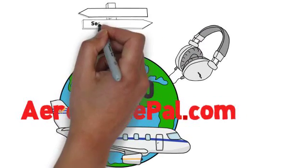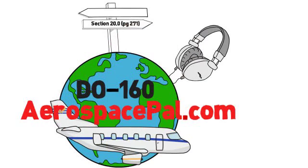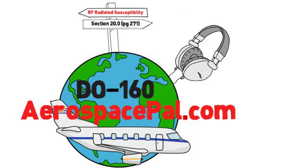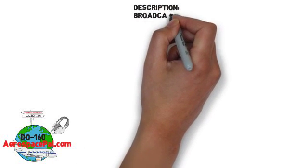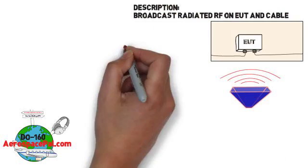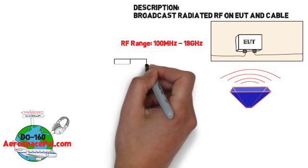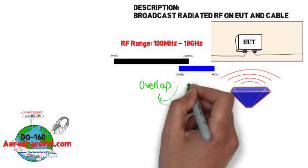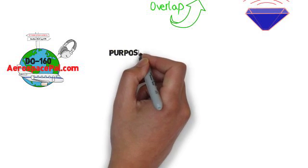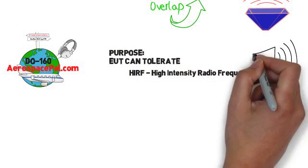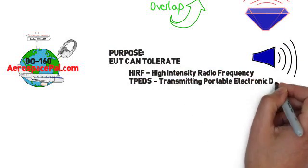In this video we'll be going over Section 20 of D160, Radio Frequency Susceptibility. Section 20 covers radiated and conducted susceptibility. We'll be going over radiated susceptibility in this video. During this test we're going to purposely broadcast radio frequencies onto the EUT and interconnecting cable. The test frequencies run from 100 MHz to 18 GHz, with a slight overlap with conducted susceptibility in the 100 MHz to 400 MHz range. The purpose of Section 20 is to ensure your system can handle environments with HERF — High Intensity Radio Frequency — T-PEDS, which is transmitting portable electronic devices, and other installed system emissions.